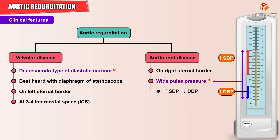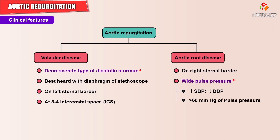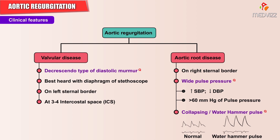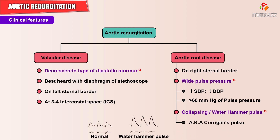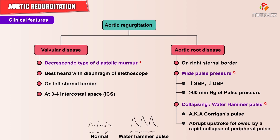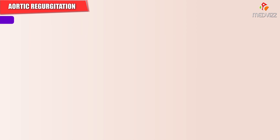Patients usually have a wide pulse pressure, with an increased systolic blood pressure and a decreased diastolic blood pressure, contributing to greater than 60 mmHg of pulse pressure. A collapsing or water hammer pulse — otherwise called Corrigan's pulse — is a common finding in aortic regurgitation, characterized by an abrupt upstroke followed by a rapid collapse of the peripheral pulse.